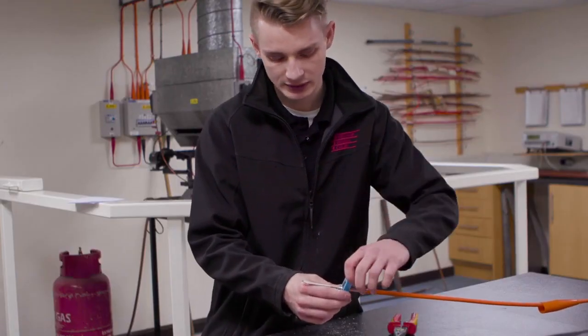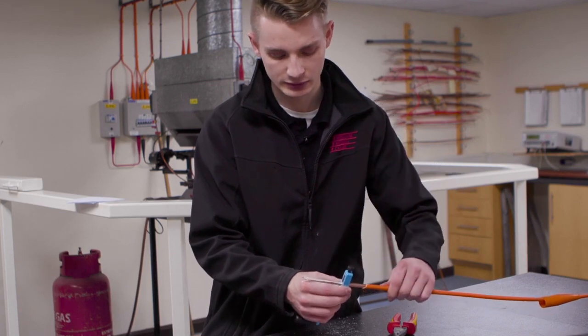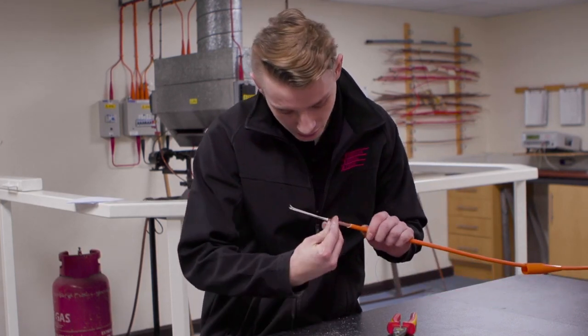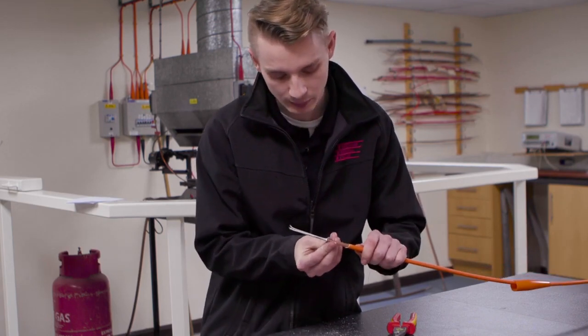So once you've got all the way to the end, just slacken your rotary stripper off, take that off, and make sure that you've got a nice clean end ready for your gland and your pot to go on.